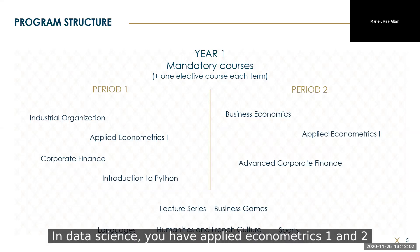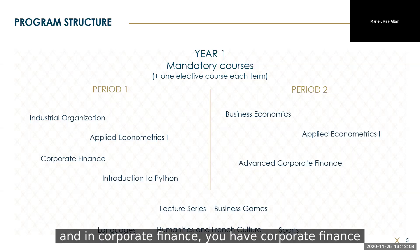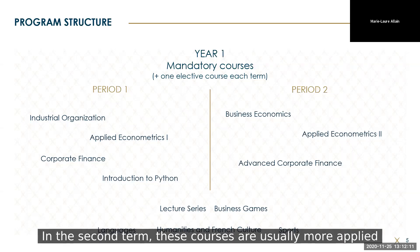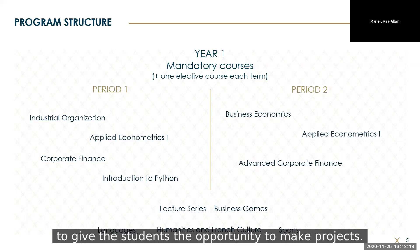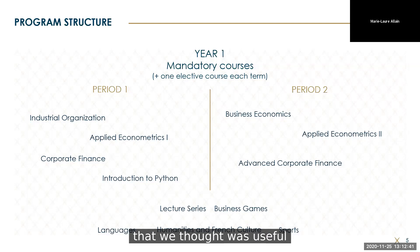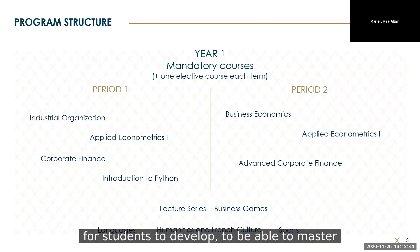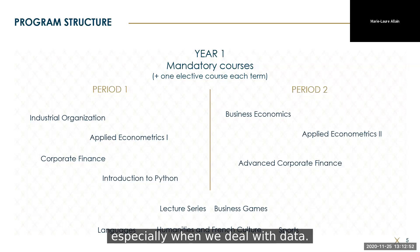In data science, you have applied econometrics one and two. In corporate finance, you have corporate finance and advanced corporate finance. In the second term, the courses are more applied and designed to give students the opportunity to make projects. There is also an introduction to Python course in the first term, which was useful for students to master techniques that are increasingly important, especially when dealing with data.